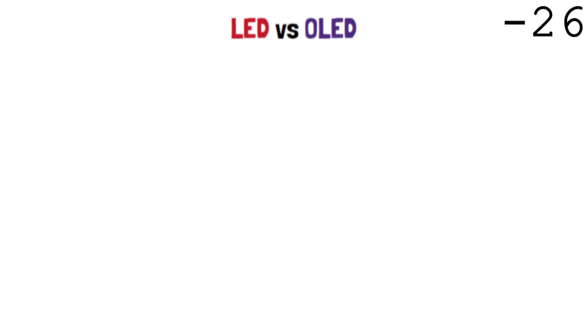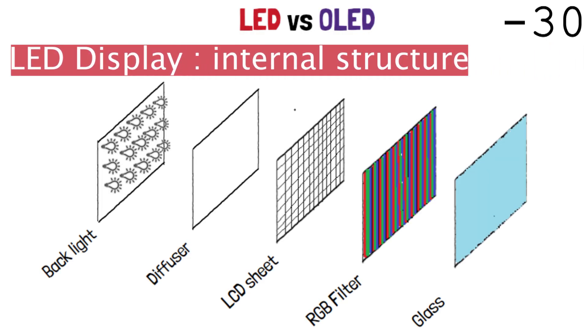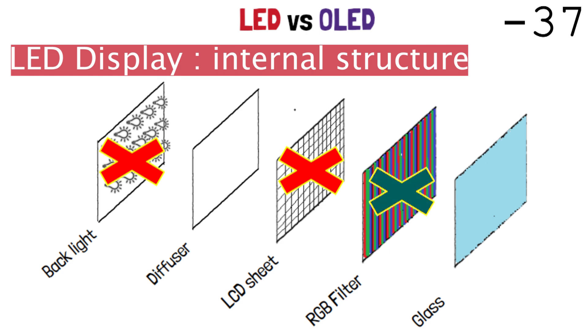But in the end, what is the difference from the LED displays? First of all, OLEDs allow to eliminate the backlight of LED technology, the LCD sheet, and the RGB filters.